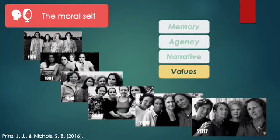In sum, the data of those investigators' experiments showed that morality—moral change—matters more than memory, agency, and narrative coherence for how people individuate persons and track their unique identities over time.